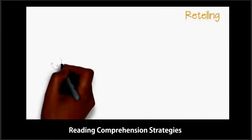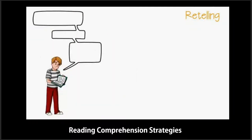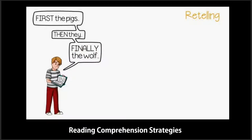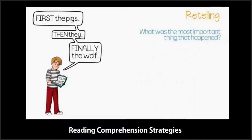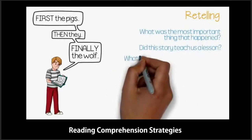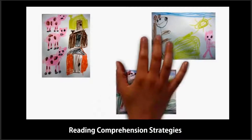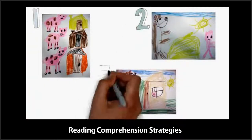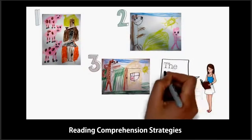Retelling occurs when a reader can describe the important parts of a story in his own words. Different students may retell the same story in different ways, and this is fine, as long as the reader can identify the main idea and key events in a story. You can help a young reader retell a story by asking questions like: What was the most important thing that happened in the story? Did this story teach us a lesson? What happened next? And after that? Having the student draw a picture of the main events in correct order is another way to promote the strategy. Listening to a reader retell a story will allow you to quickly assess her understanding of the text.